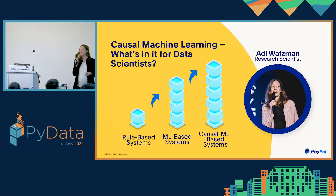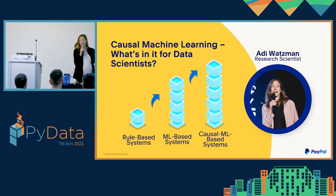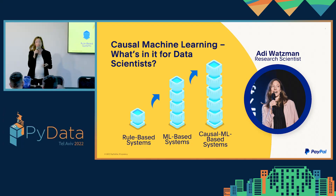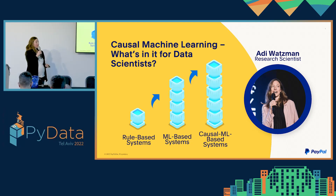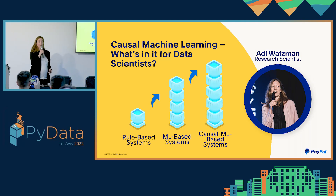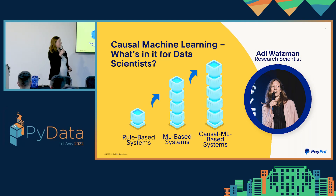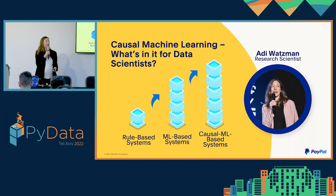Hi. Think about the lift we got by moving from rule-based systems to machine learning. What if I tell you that we can get an additional lift with causal machine learning? For example, in a marketing campaign by identifying customers for whom sending a coupon will increase engagement. My name is Adi. I'm a research scientist at PayPal and in the past year and a half I dived into this fascinating world of causal inference and causal machine learning, and I'm happy to share with you today what's in it for data scientists.